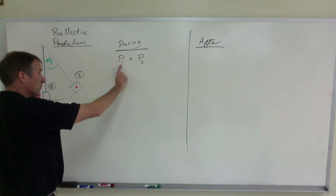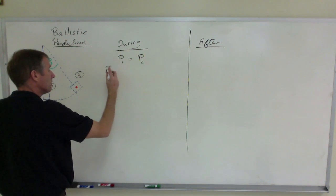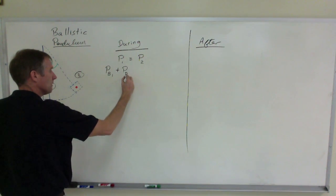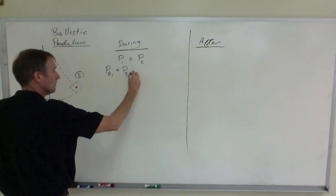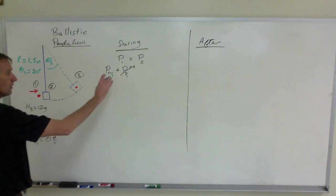So the momentum before the collision at point one will be the momentum of the bullet at point one plus the momentum of the pendulum at point one. But that's equal to zero because it's at rest, the pendulum.